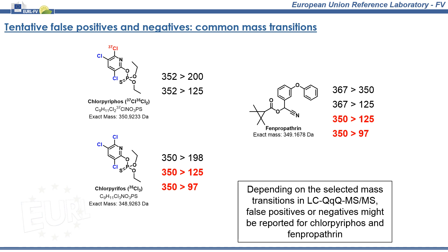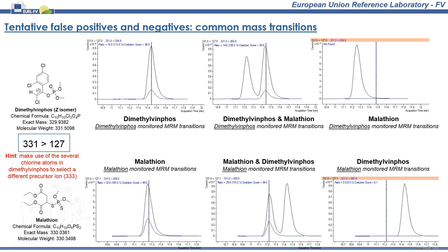However, although they are somewhat close in retention time, in most methods their retention times should be different enough. Another common pesticide, malathion, shares its unit mass with one dimethylvinphos isotopologue. As in the case of chlorpyrifos, dimethylvinphos contains three chlorine atoms and two equally abundant isotopologues. One dimethylvinphos isotopologue shares unit mass with malathion, and, due to their similar chromatographic behavior, are prone to co-elution.